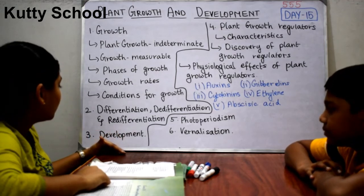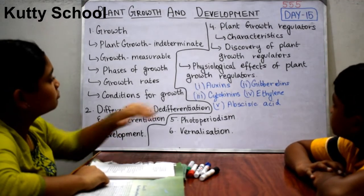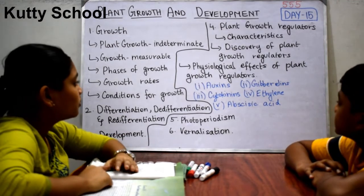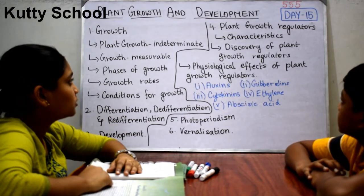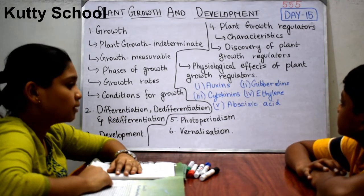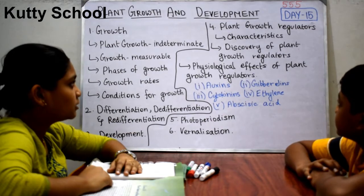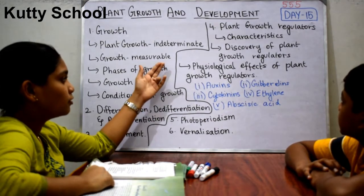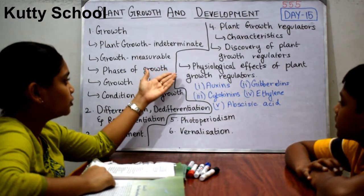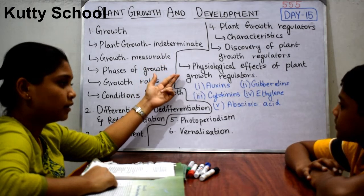The second topic is differentiation and de-differentiation of plants. The third topic is development. The fourth topic is plant growth regulators, which has three sub-topics: characteristics of plant growth regulators, discovery of plant growth regulators, and physiological effects of plant growth regulators.